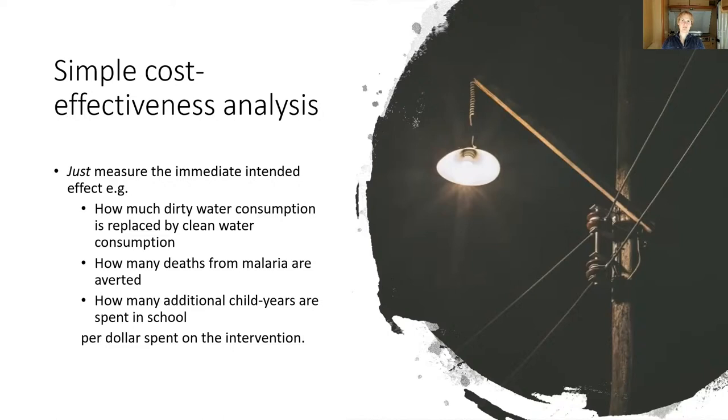In what I'll call a simple cost effectiveness analysis, one only measures the immediate intended effect of one's intervention. So for example, if one's talking about water pumps, you might have a cost effectiveness analysis that tries to calculate how many litres of dirty water consumption are replaced by litres of clean water consumption per dollar spent on the intervention. If we're talking about distributing insecticide-treated bed nets in malarial regions, then we might be looking at data that tells us how many deaths are averted per dollar spent on bed net distribution. If it's child years spent in school, well then the question is by how much do we increase child years spent in school per dollar spent on whatever intervention it might be.